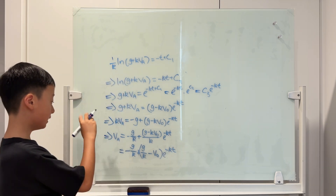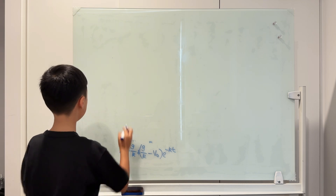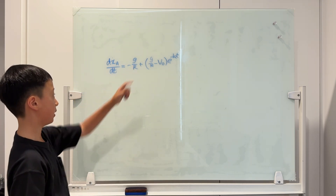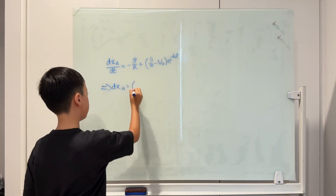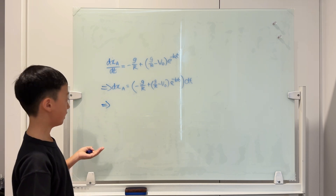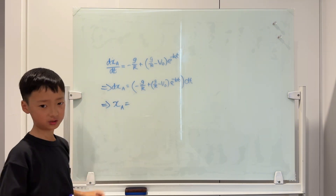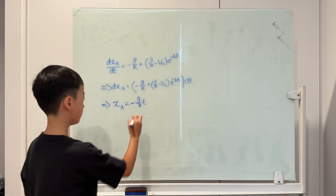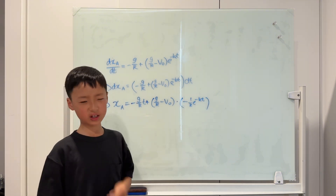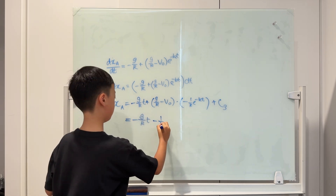We can change VA into dXA over dt. This is no longer a differential equation, so we multiply dt to the right-hand side and integrate. Integrating with respect to t: the first term gives negative G over K times t, and the second term — (G over K minus V0) times e to the negative Kt — integrates to negative (G over K minus V0) over K times e to the negative Kt, plus constant C3. We substitute in initial values: when t equals 0, XA equals D.